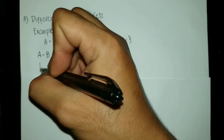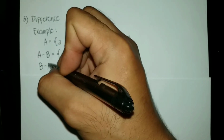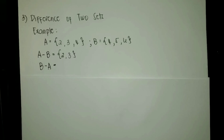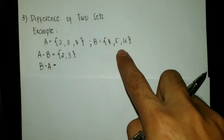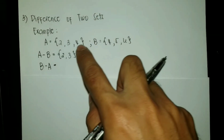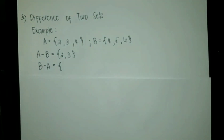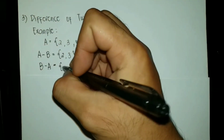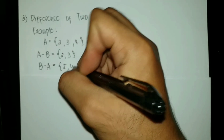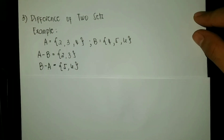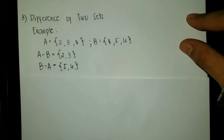How about B minus A? B minus A means the elements of B which are not elements of A. So what are the elements of B that are not elements of A? That will be the set with the elements 5 and 6. That is the difference of two sets.